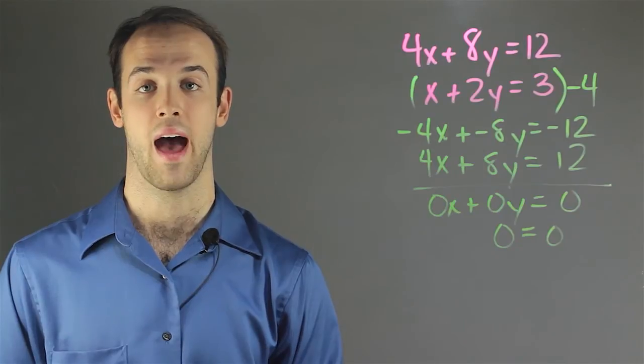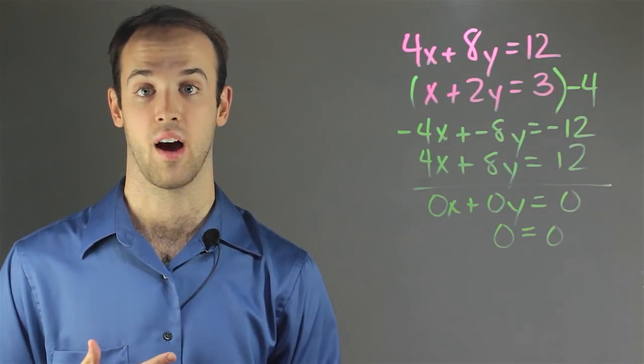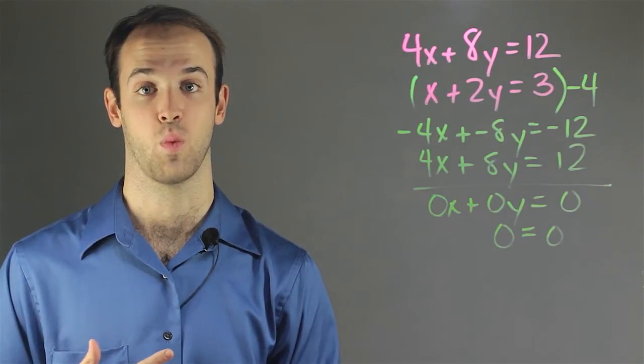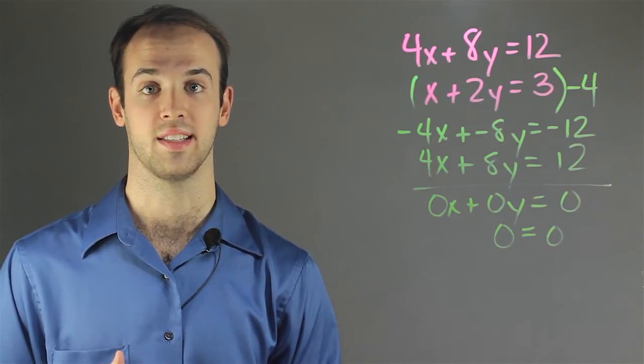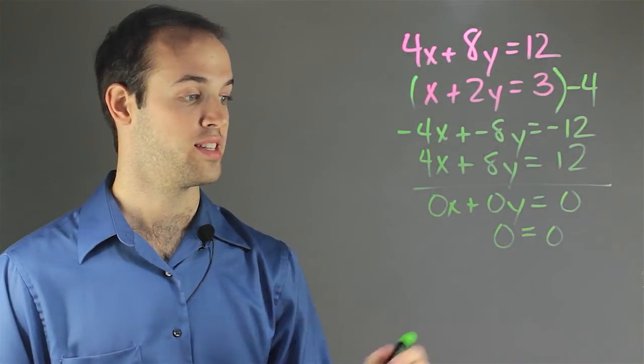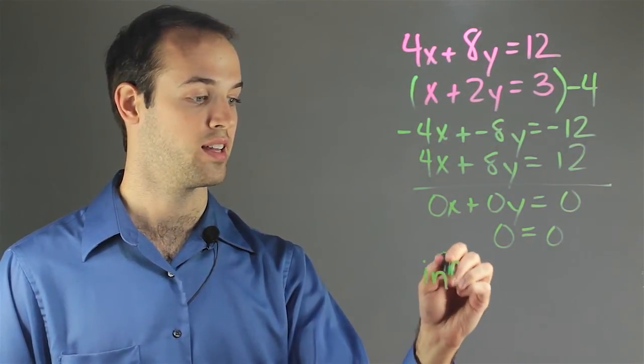And what this means in math is that these lines lie directly on top of each other, or that any point that satisfies one of the lines is always going to satisfy the other lines. So I know that this has infinitely many solutions.